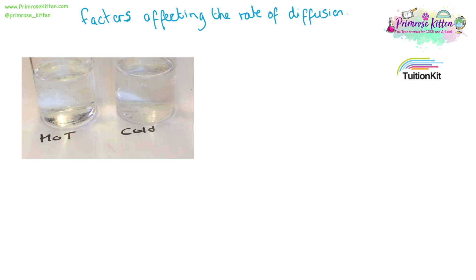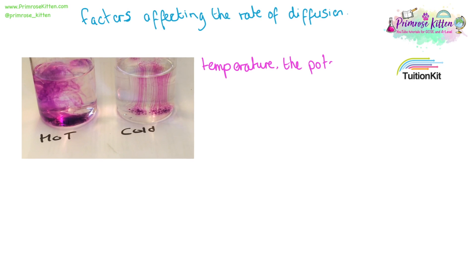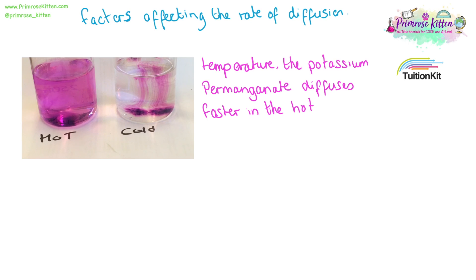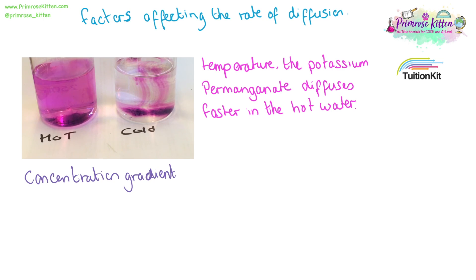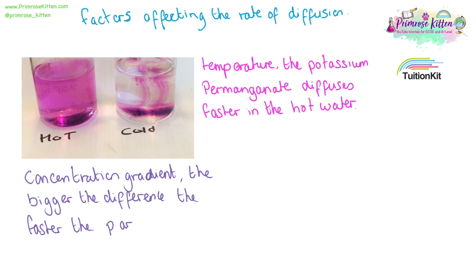There are a number of factors affecting the rate of diffusion. The first one we've seen in this video is temperature — the potassium permanganate will diffuse faster in the hot water. The concentration gradient will also play a part: the bigger the difference, the faster the particles will diffuse and spread out.